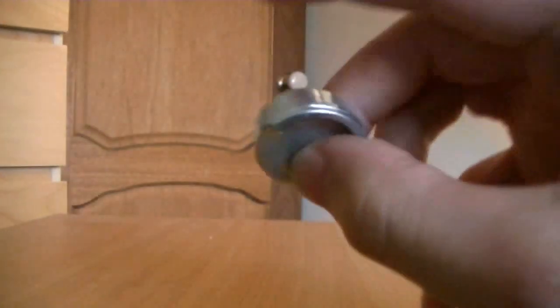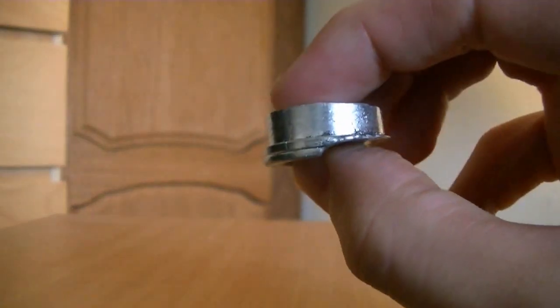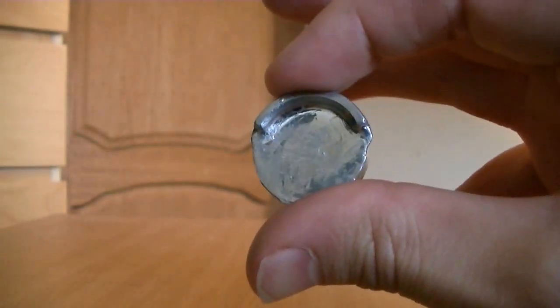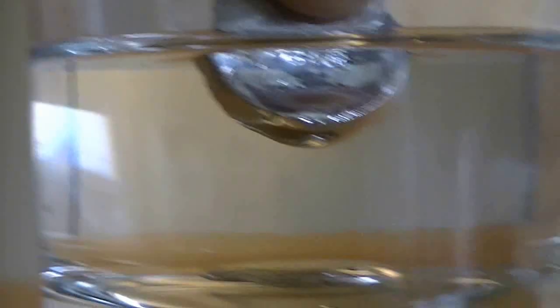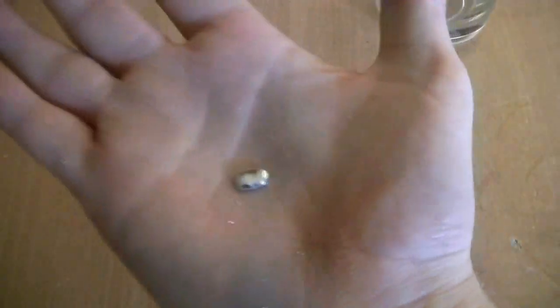So here we have around 20 grams of solid gallium. Let's melt it down with some warm water. There it goes. It feels a bit like melted solder, but cold. Pretty weird.